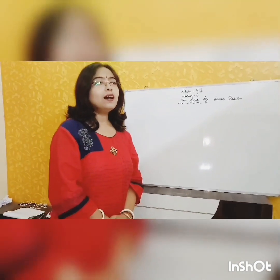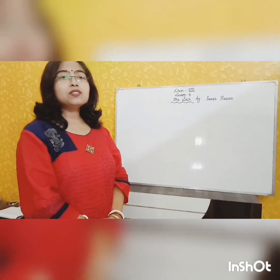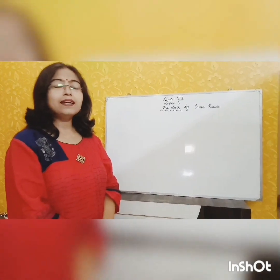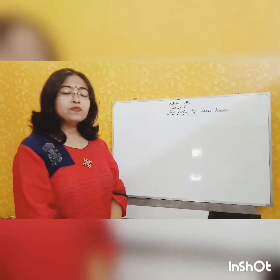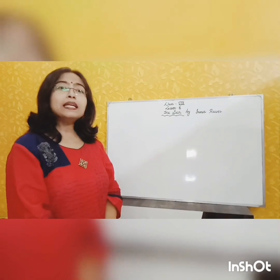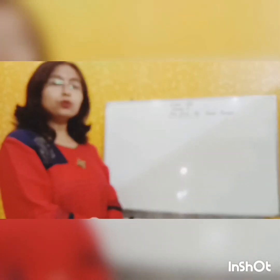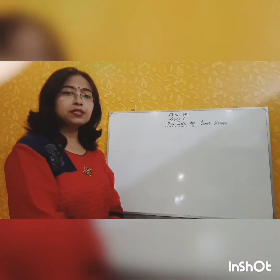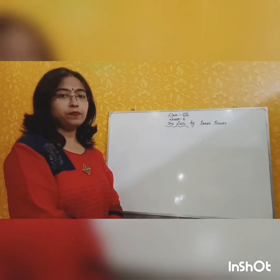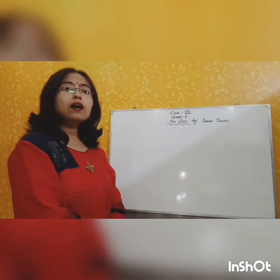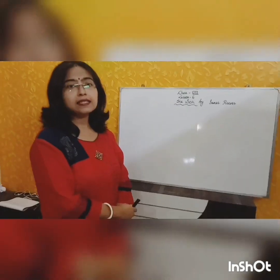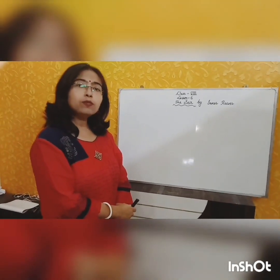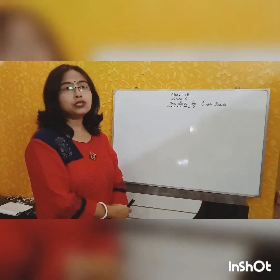So the poem DC is written by James Reeves. Do you know anything about James Reeves? He was a British author. He was known for writing poetry, plays and contributions to children's literature. He was a critic as well as a broadcaster too. He wrote both for adults and children.